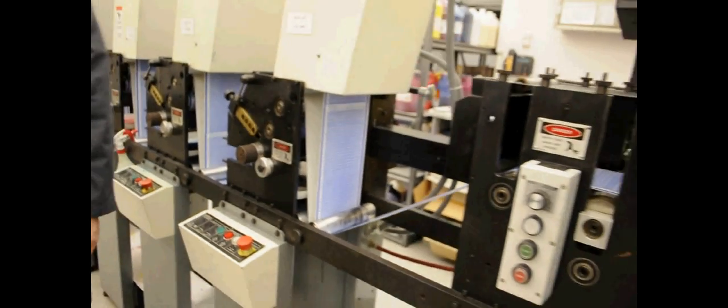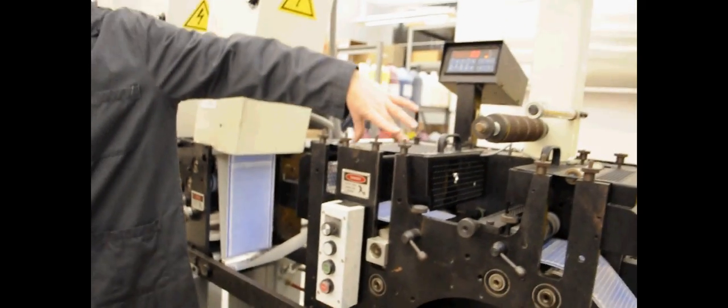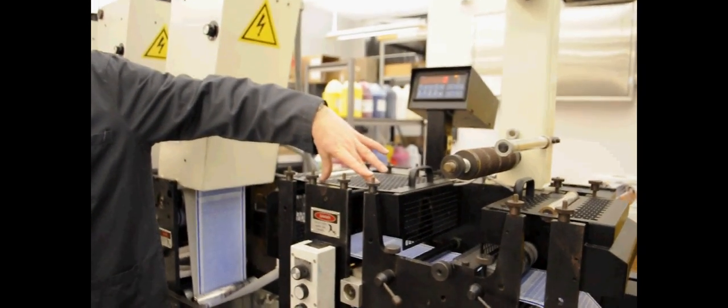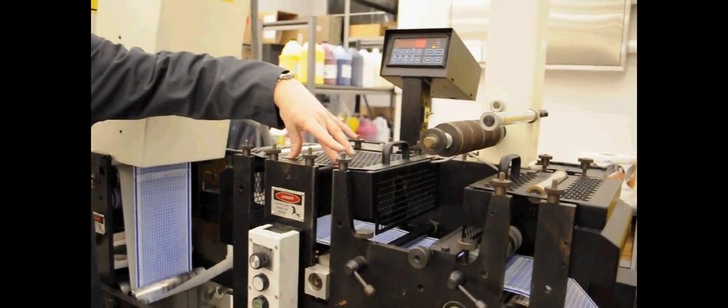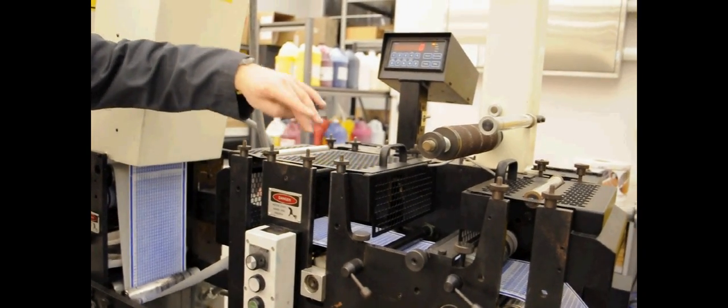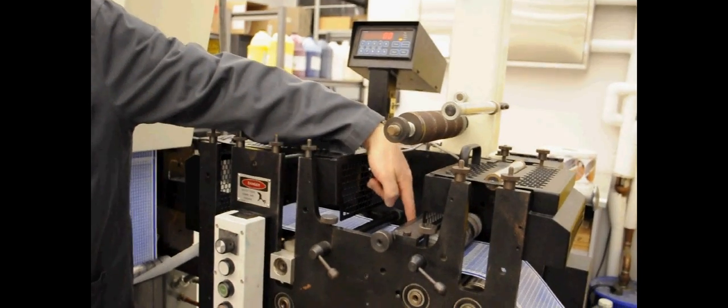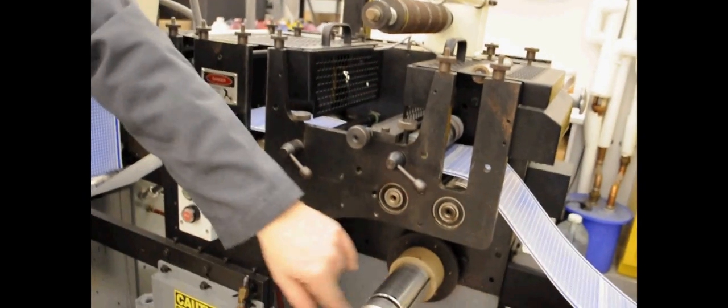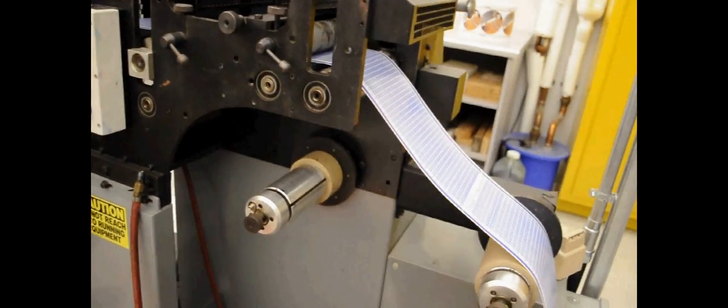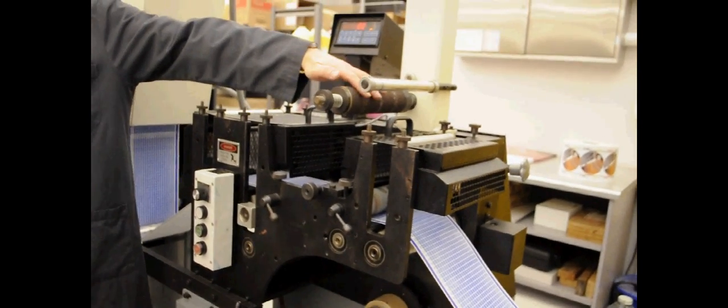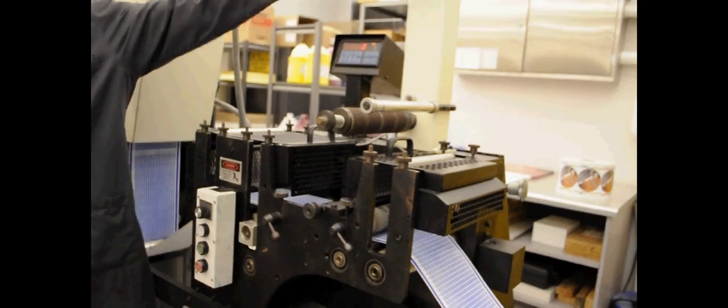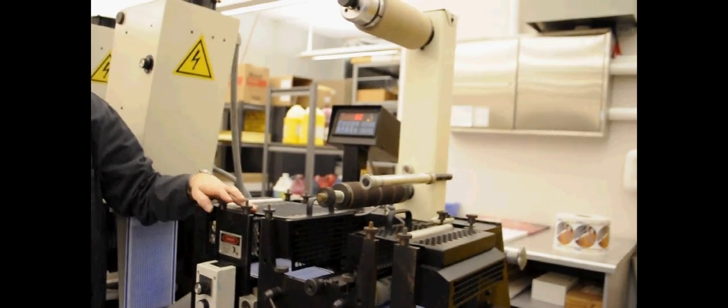Then I have here the possibility to do two die cutting actions if necessary. Then I can slit the web here and wind it up on two different rolls. And if I have die cutting happening here, I have to remove the matrix and wind it up on this roll up here.